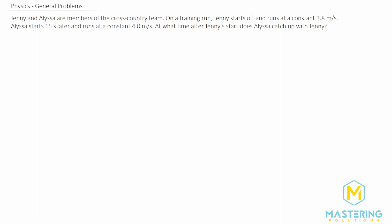What we need to do is write an equation for both of them, and then we're going to use substitution to actually solve for it. Our end goal is to figure out what the distance is for Jenny that will be the exact same distance for Alyssa.